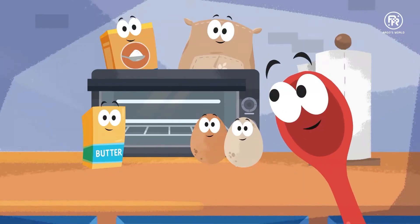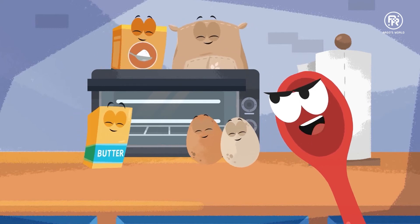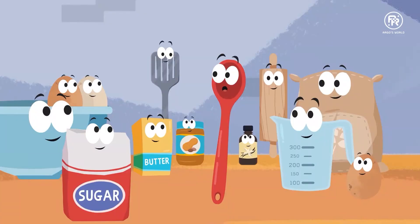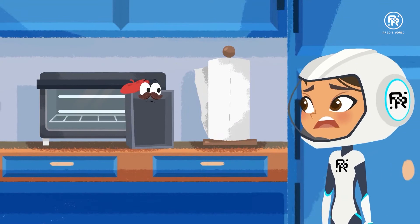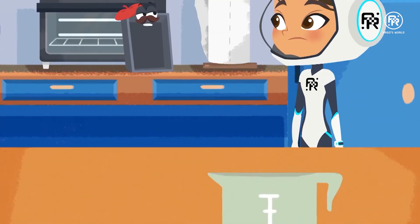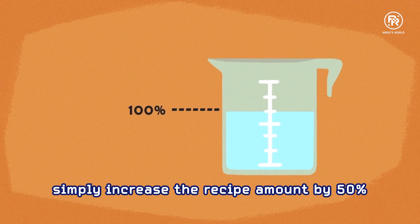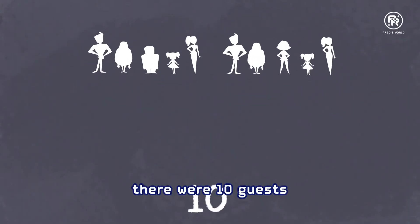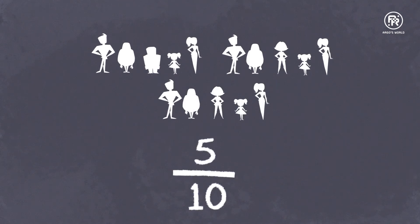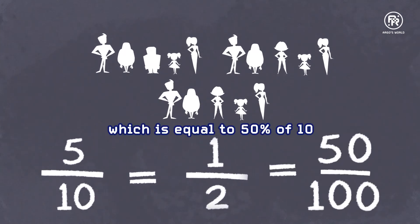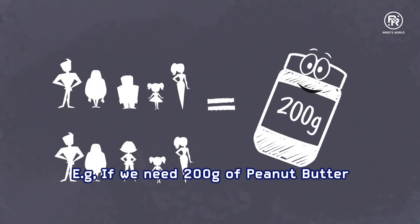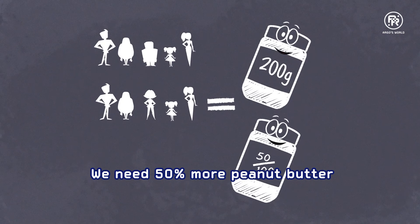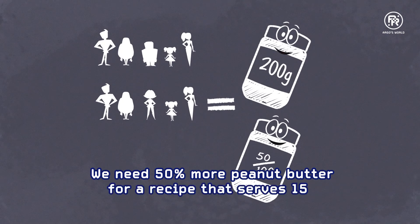Excellent. We have enough ingredients for a cake that serves six, seven, eight, nine, ten. But I need a cake that serves 15. What should I do? It is simple, mon ami. When you give Tyler the instructions, simply increase the recipe amounts by 50%. Oh, because 15 is 50% more than 10. Originally, there were 10 guests. Now, five more guests are coming. Five is half of 10, which equals 50% of 10. Which means that if we need 200 grams of peanut butter for a recipe that serves 10, we'll need 50% more peanut butter for a recipe that serves 15.